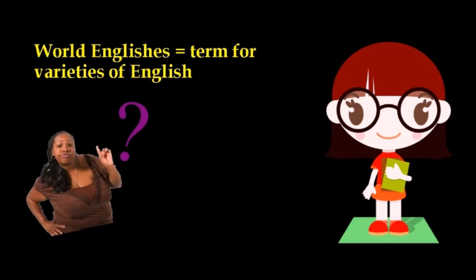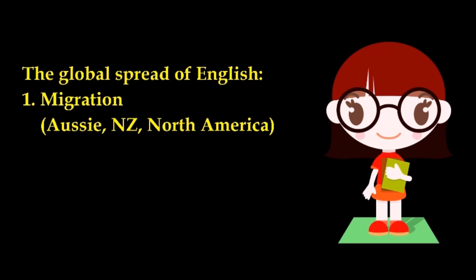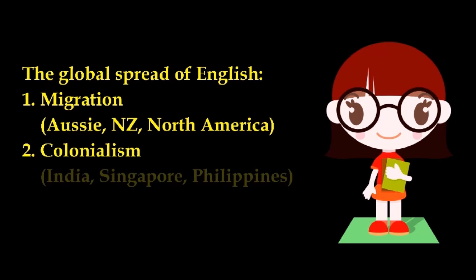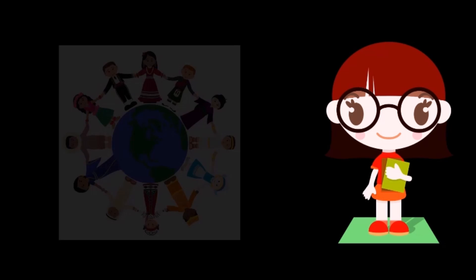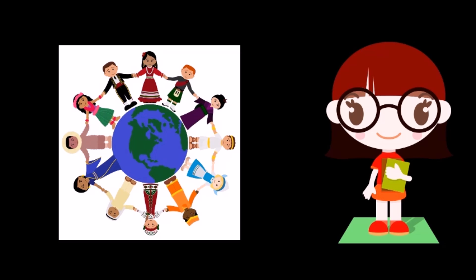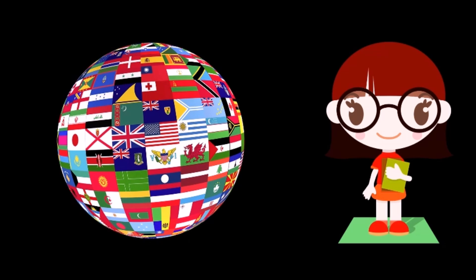You must know that English has become a global language. English was mostly spread by migration, such as in Australia, New Zealand and North America, and colonialism, such as in India, Singapore and the Philippines. People from different speech communities, cultures, and countries whose first language isn't English use English to communicate with other people from other speech communities. The English that they use is influenced by their native languages. Even people from countries with English as their first language speak differently, and there are often misunderstandings between native speakers of English.